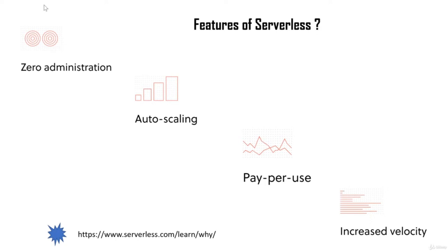The second key feature is auto scaling, which makes it possible to ramp up your infrastructure as per needs. As your application keeps growing in size, the serverless application will auto scale and use extra resources to make sure it's running properly. The third important feature is pay-as-you-use — you only pay for the resources you have used, such as the period your Lambda was running. This makes it quite cost efficient.